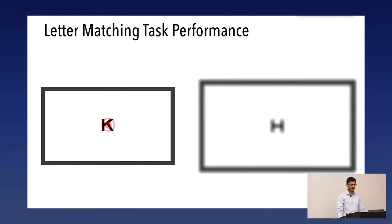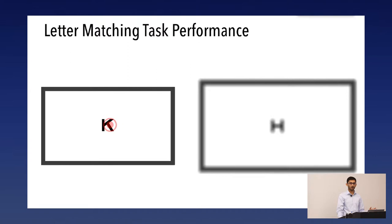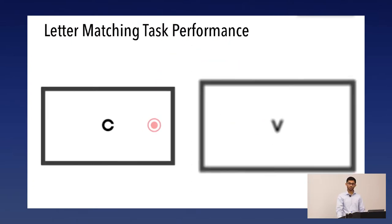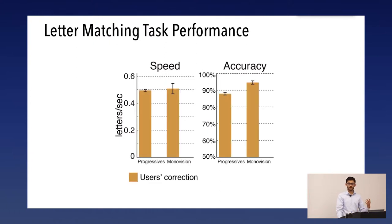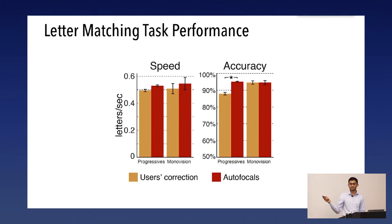We also ran a letter matching task: one letter appears on each of two screens, and subjects simply say whether the letters are the same or not. We measure both speed and accuracy. Autofocals perform slightly faster than subjects' own correction in both groups. For monovision users, this is because the closer distance is blurrier and requires more effort. For progressive users, refocusing requires tilting the head, which is slow — and because of this, they took a statistically significant hit in accuracy to maintain any speed.